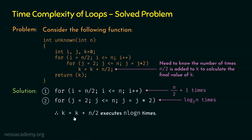Therefore, the statement k = k + n/2 will execute n log n times. The frequency count of this statement is the same as the frequency count of the two for loops, which is n log n. Recall that this frequency count is the same as the number of times n/2 is added to k.